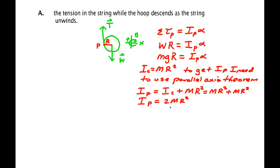Now that I know the moment of inertia, I can plug that back up into here. So I have MGR equals 2MR squared alpha. My mass cancels, one of the R's cancels, and I get G equals 2R alpha.